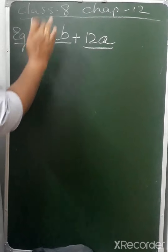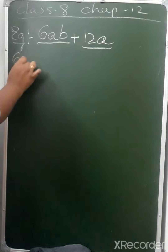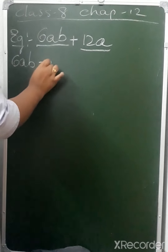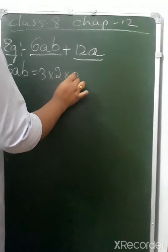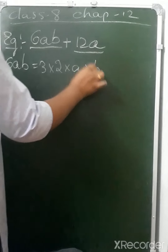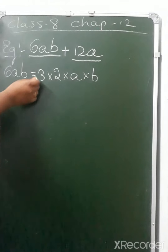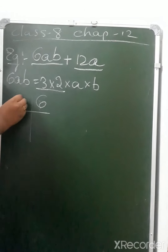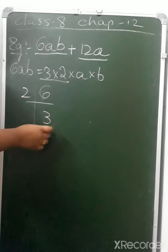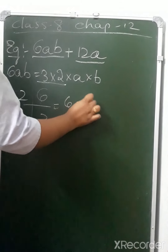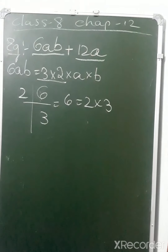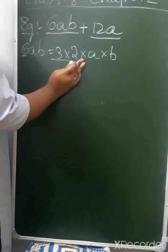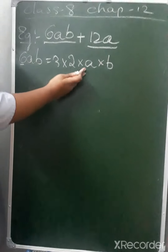Let's see how we can write 6ab. 6ab equals 3 into 2 into a into b. How do we get 3 into 2? By prime factorization of 6: 2 threes are 6, so 6 equals 2 into 3. By prime factorization, we write 6 as 3 into 2, and ab as a into b.